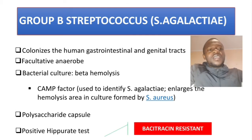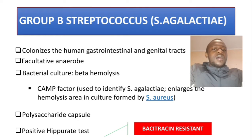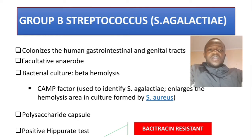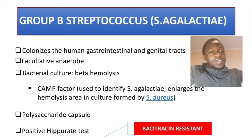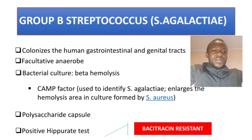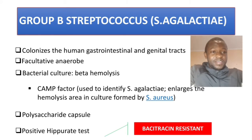As I mentioned in the previous video, we were talking about Group A Streptococcus — Group A Streptococcus is bacitracin sensitive, while Group B Streptococcus is bacitracin resistant. Simple as that.